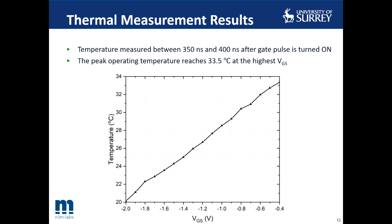The thermal measurement was performed when the device was biased with a drain voltage of 20 volts, and the gate voltage was swept between minus 2 volts, which is the pinch-off, to minus 0.4 volts. Temperatures were obtained between 350 and 400 nanoseconds after the gate pulse was turned on, to replicate the same acquisition scheme used during the post-IV measurements. The results indicate that although there is no thermal droop on the drain current, self-heating is present, and the operating temperature increases to a peak of 33.5 degrees Celsius at the highest gate voltage of minus 0.4 volts.